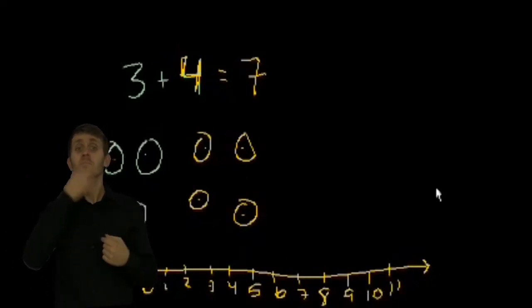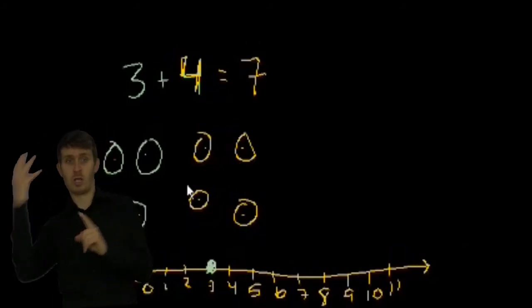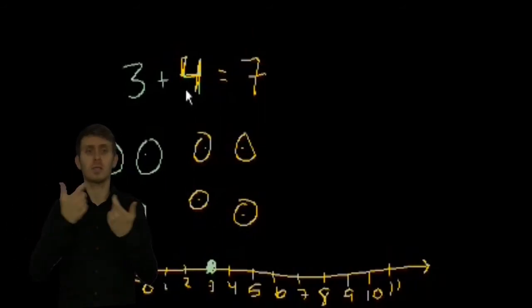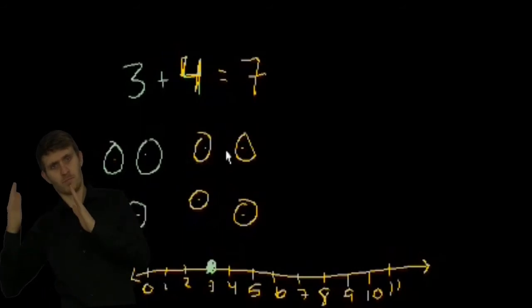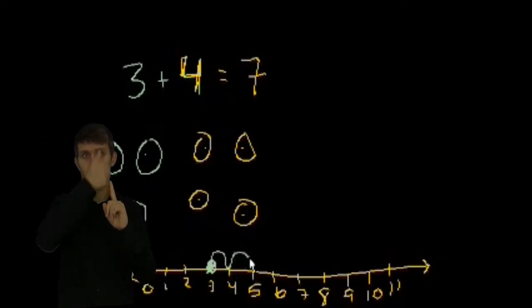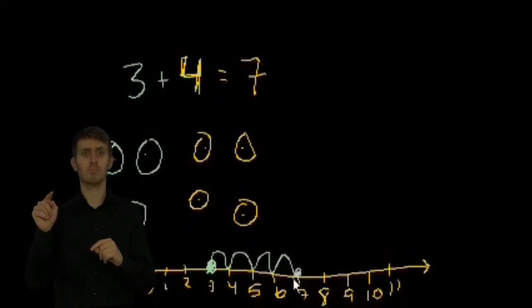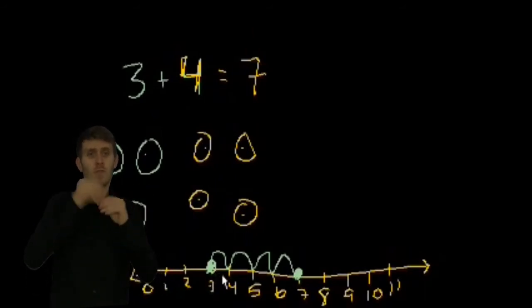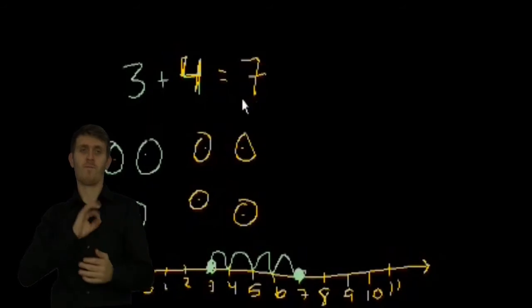So we're saying 3 plus 4. So let's start at 3. And we're going to add 4 to that 3. So all we do is we go up the number line, or we go to the right on the number line, 4 more. So we go 1, 2, 3, 4. Notice all we did is we just increased it by 1, by 2, by 3, by 4. And then we ended up at 7. And that was our answer.